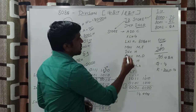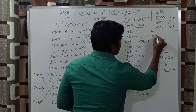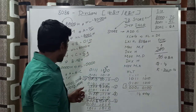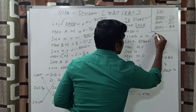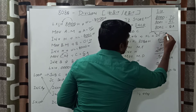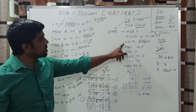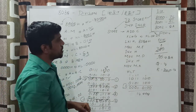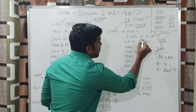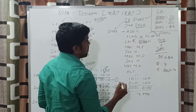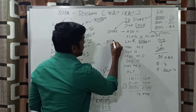The next instruction is XCHG (exchange). Whatever content is in the HL pair is transferred to the DE pair. Finally, the HL pair content 0004h is transferred to DE pair, so DE pair content becomes 0004h. The next instruction is LXI H, 8050h — this is the output memory location. This immediate data is transferred to the HL pair, so after execution the HL pair value is 8050h.